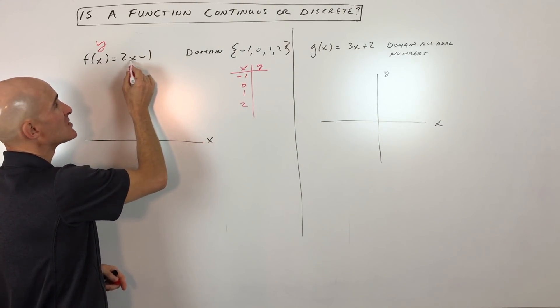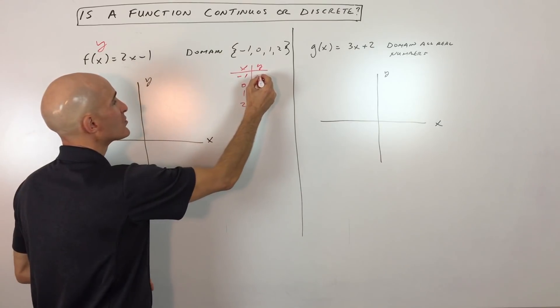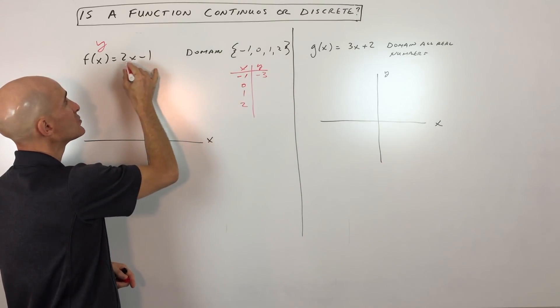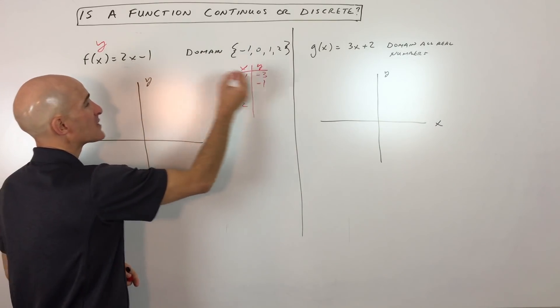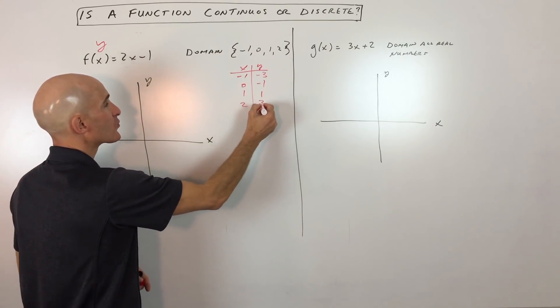If we put negative 1 in for x, you can see we're getting negative 2 minus 1, which is negative 3. If we put 0 in, 2 times 0 is 0, minus 1 is negative 1. 2 times 1 is 2, minus 1 is 1. And then 2 times 2 is 4, minus 1 is 3.